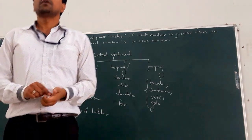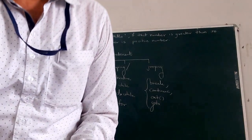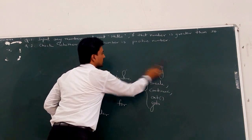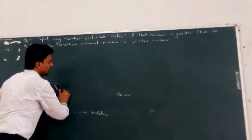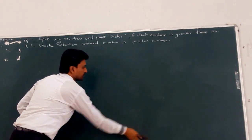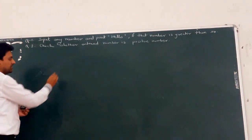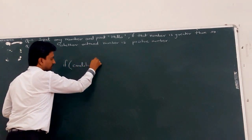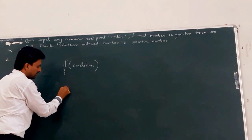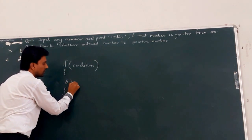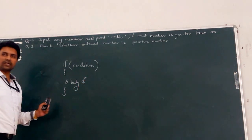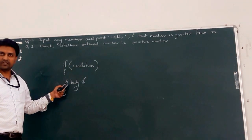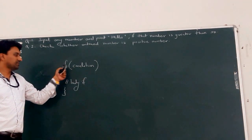We will start from branching or selection statements. The first is the if statement. The syntax is: if, then condition in parentheses, then curly brackets containing the body of if, also called statements. Whatever statements are written inside the if — this is called the body of if.